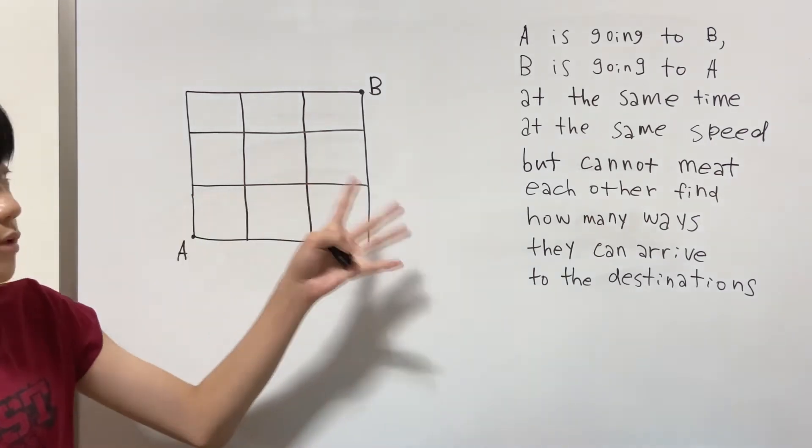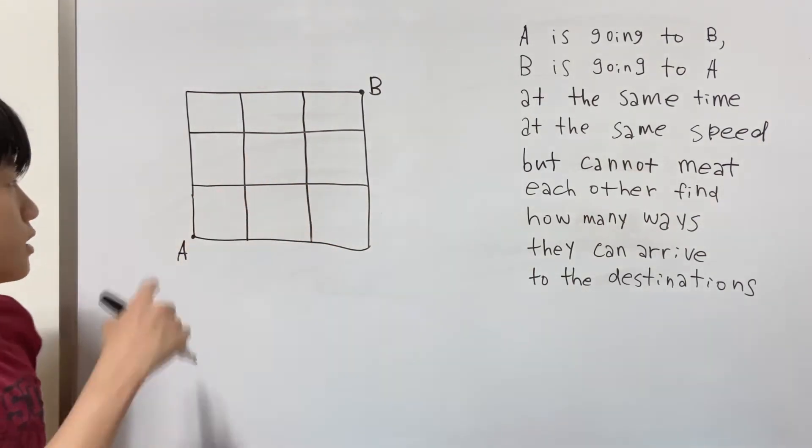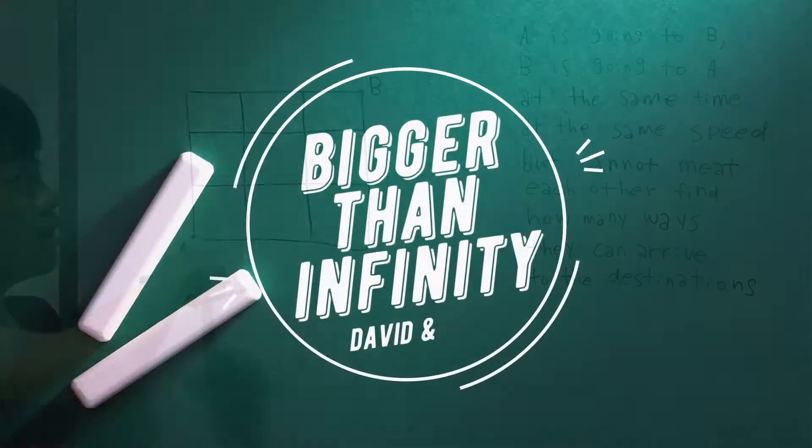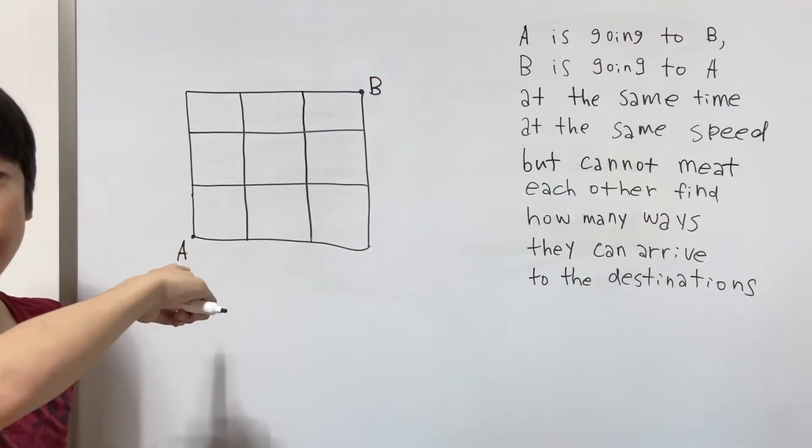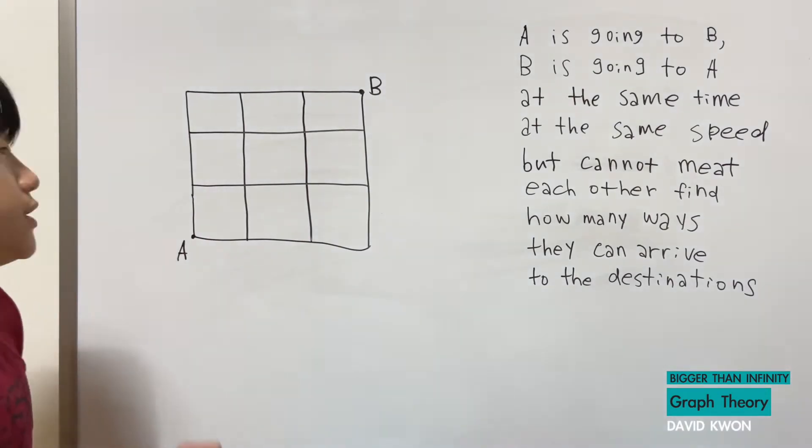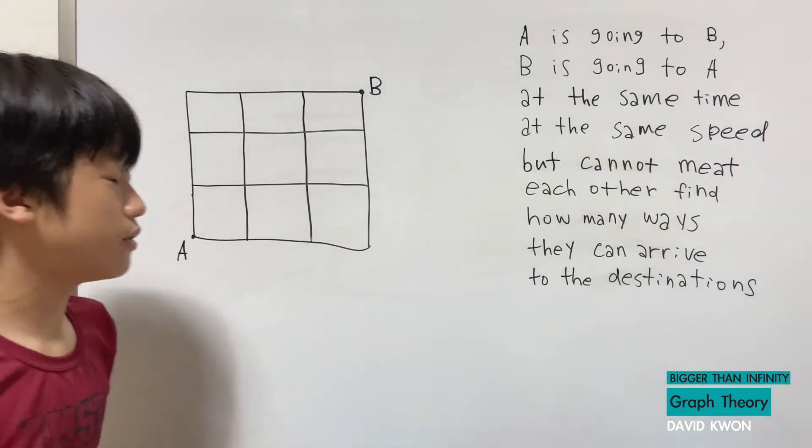Hello everyone and today we have this problem where it says that A is going to B and B is going to A. But they cannot meet each other and they're also going at the same time at the same speed. How many ways can there be for their destinations?